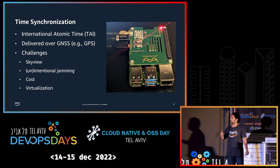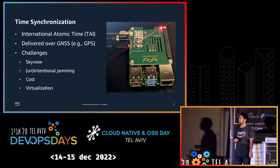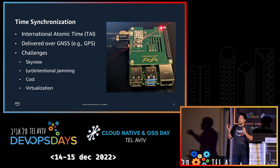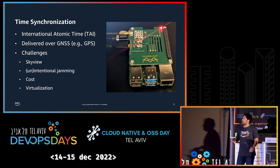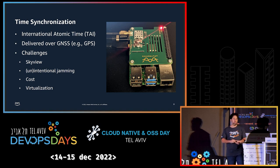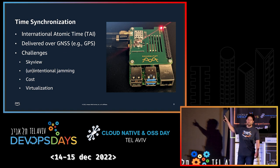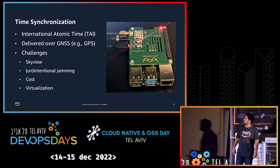We know how to measure a second, but how do we get the actual time? For that we have clock synchronization. At the heart of UTC is International Atomic Time — TAI, abbreviated from French — which is essentially UTC without leap seconds. It's measured by a weighted average of about 400 atomic clocks in 80 laboratories around the world, and delivered over satellites, for example via the GPS constellation.